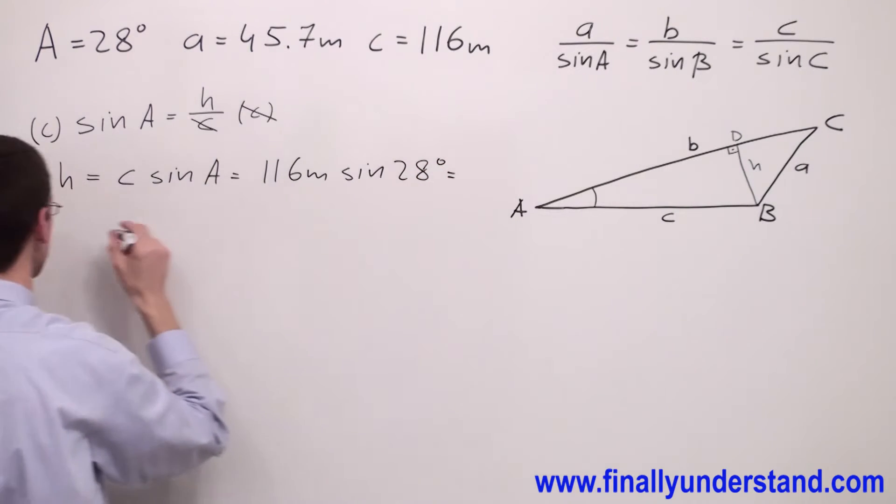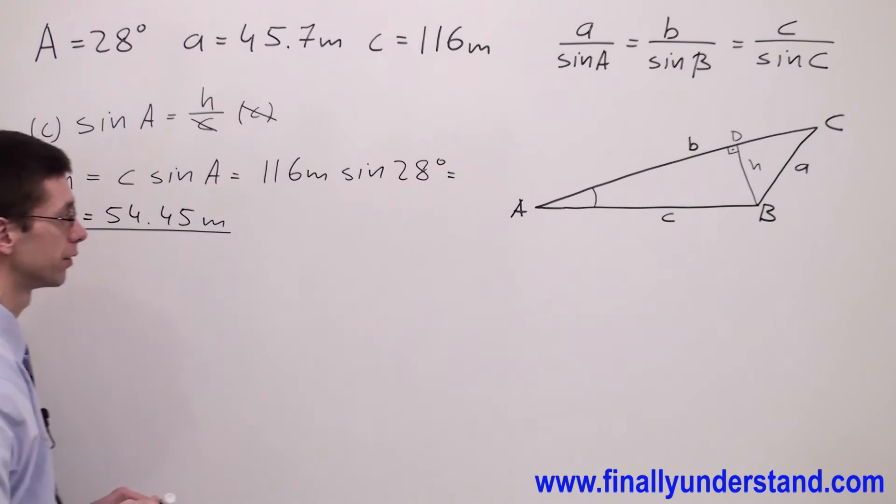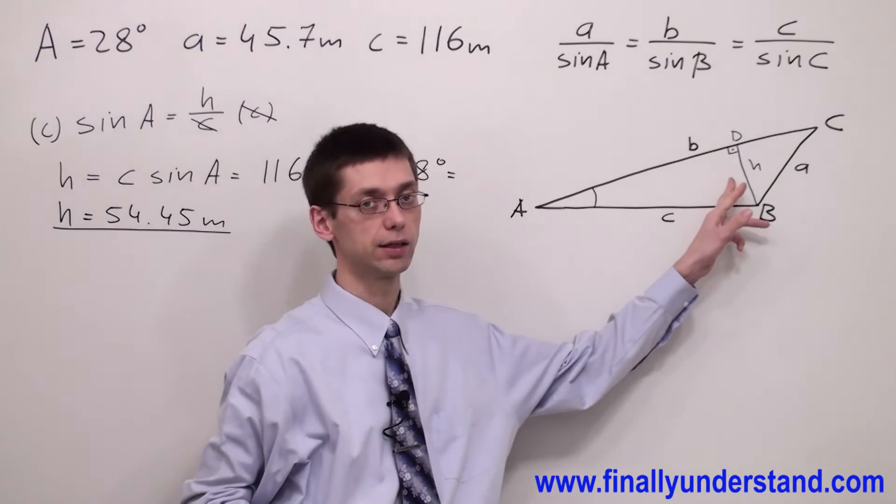H equals C times sine of angle A. Use the calculator and you're supposed to get H equals 54.45 meters. This is the length of the altitude.